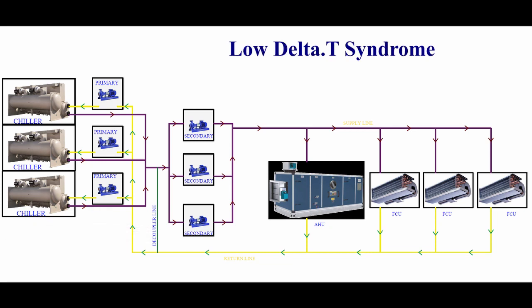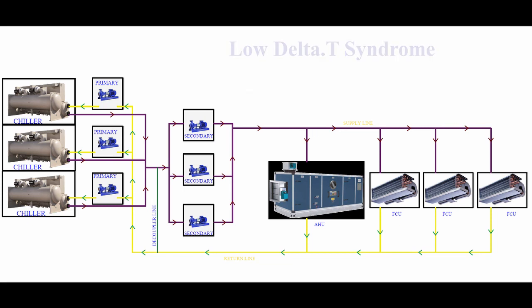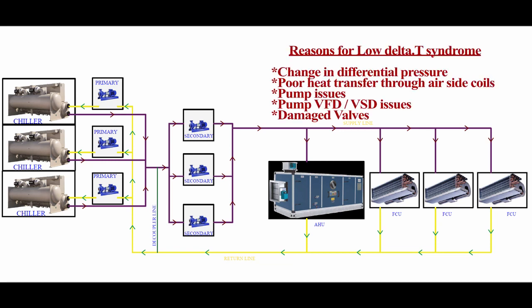The reduction in chilled water temperature range is called low delta T syndrome. Not only due to changes in differential pressure — this can happen due to various reasons: if the heat transfer through the air side equipment coil is not proper due to air contaminants or dust, or the flow rate of water through the coils is too high, or any problems in the pump variable speed drive, or problems in the control and balancing valves — all these cause low delta T syndrome.